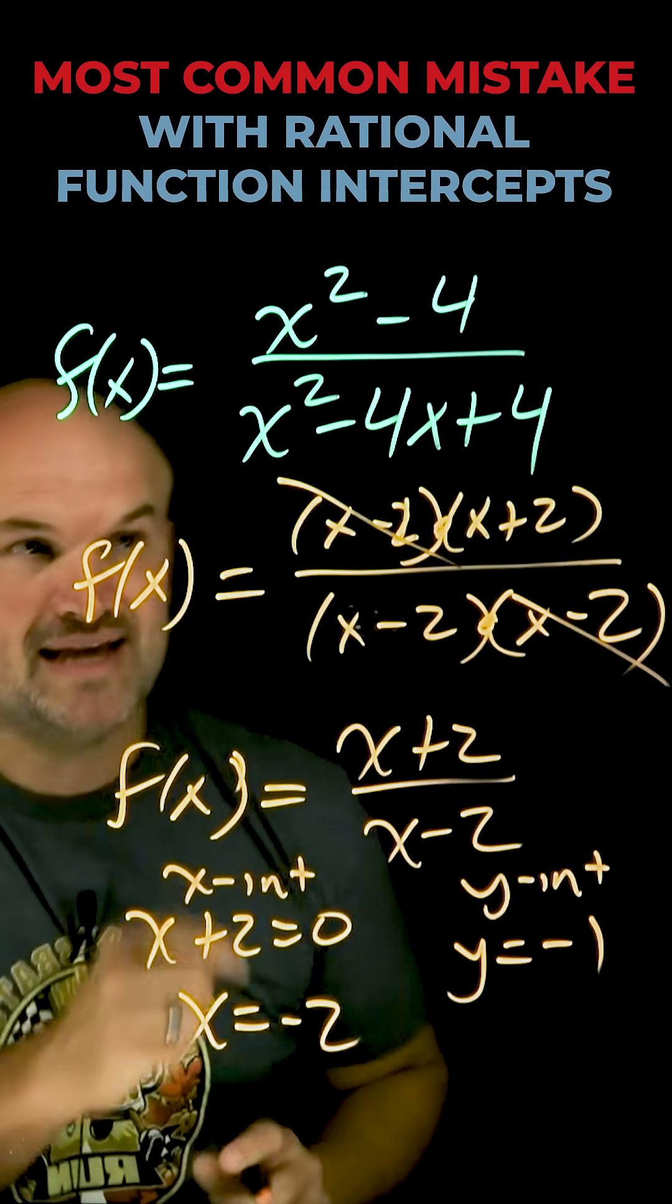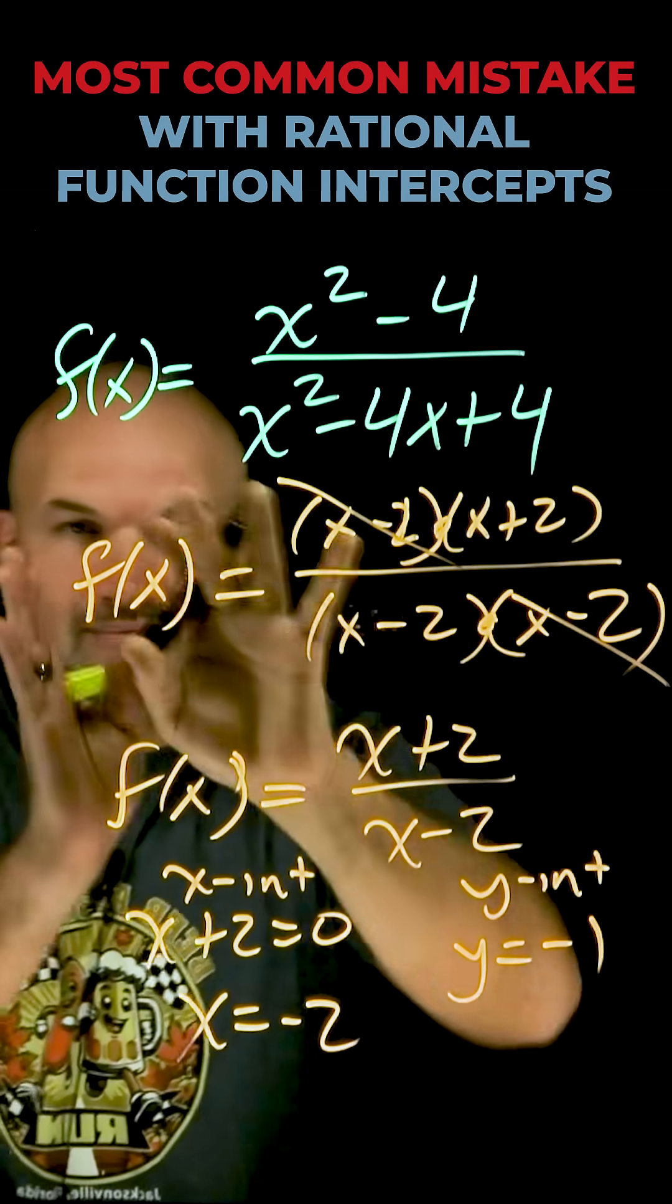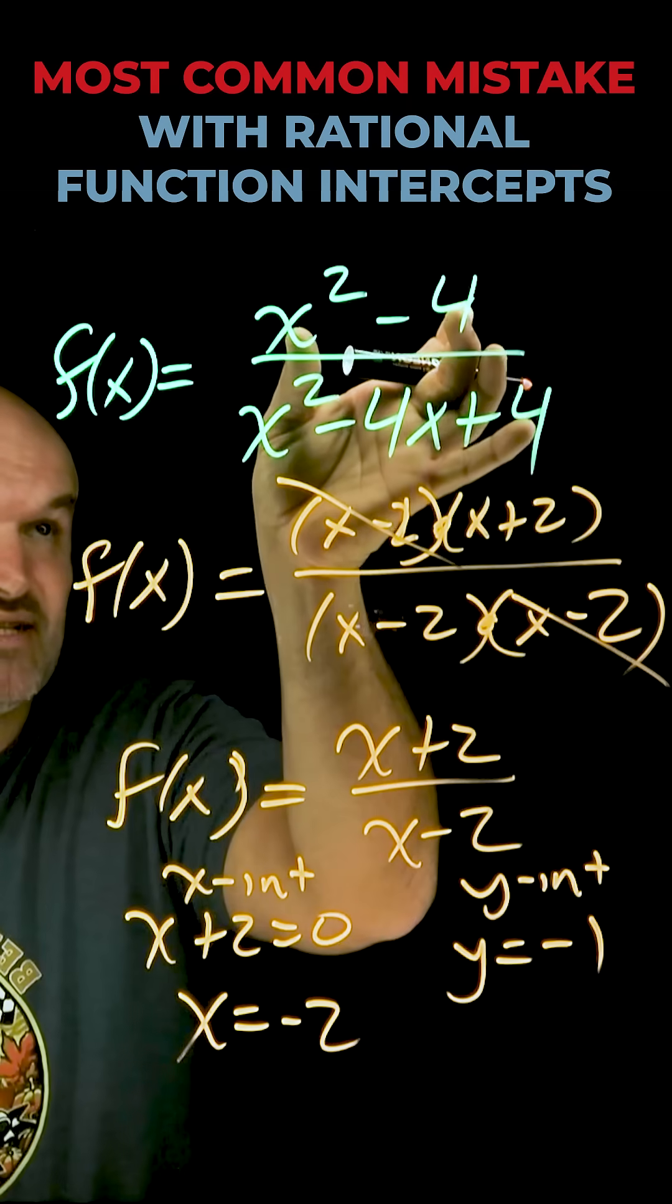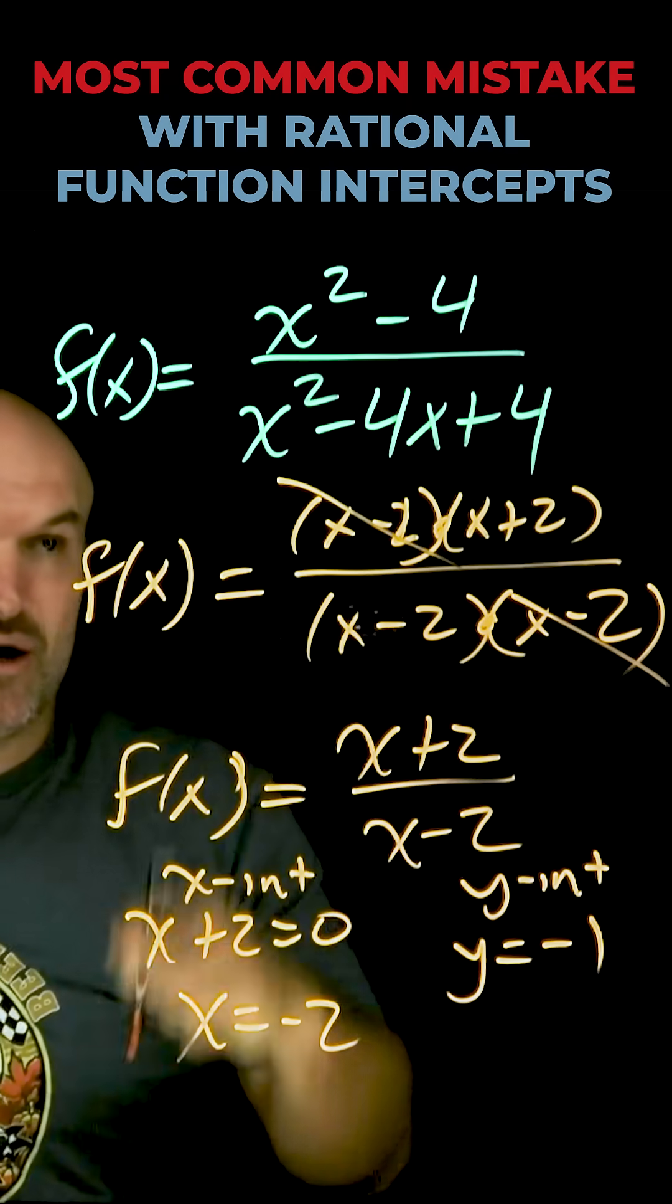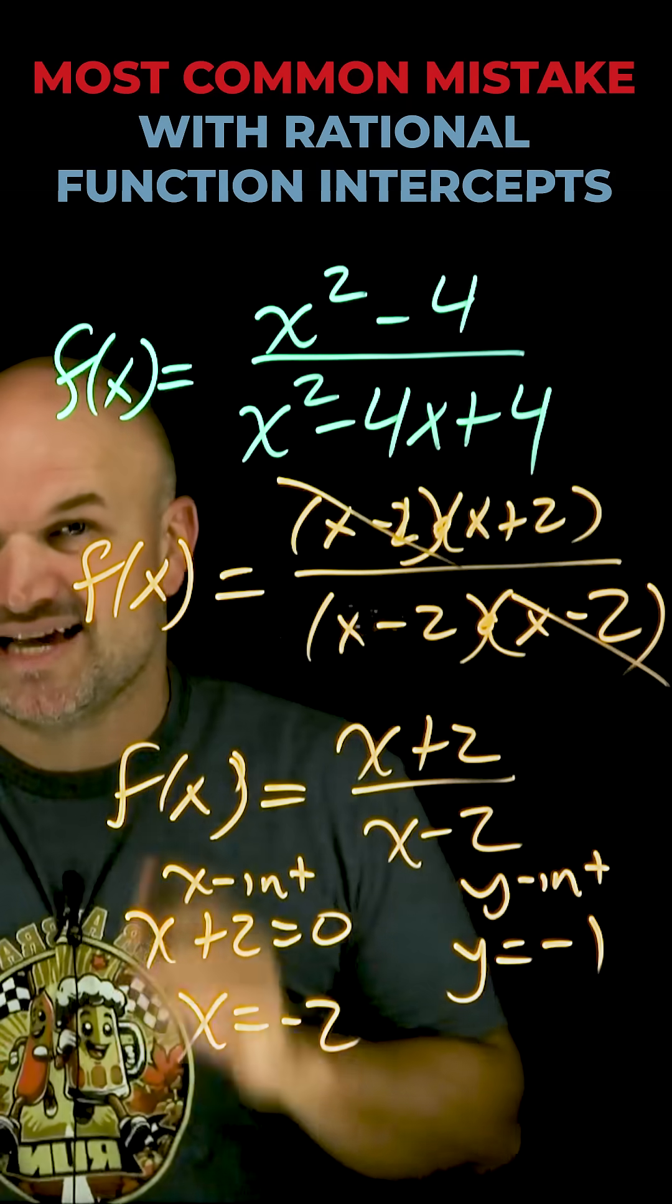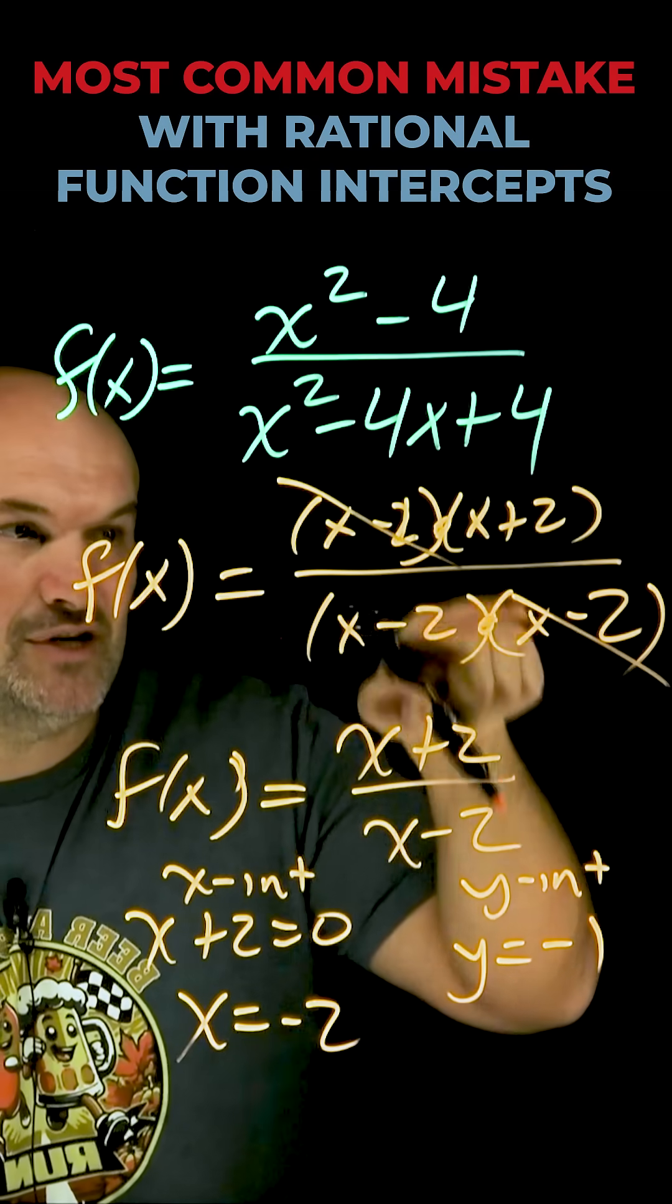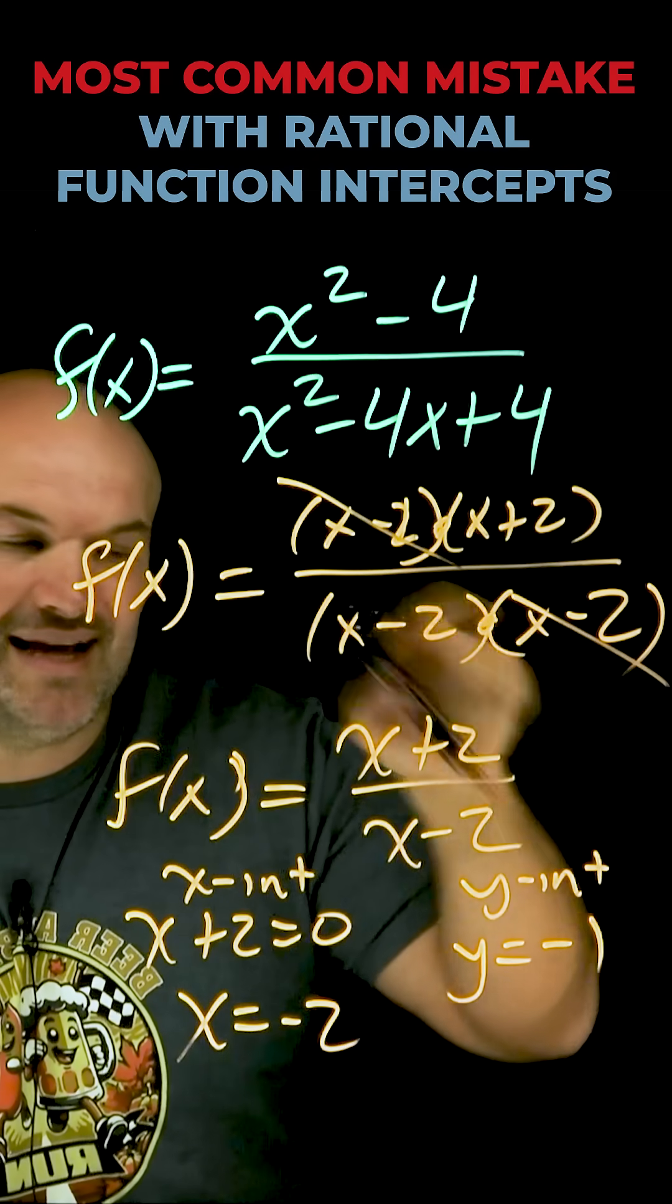But again, that mistake that students will make is they won't even factor. They'll simply just take my numerator and set it equal to 0. But if you do that, you'd have two solutions: x equals 2, x equals negative 2. Unfortunately, when x equals positive 2, that is a removable discontinuity and not an x-intercept.